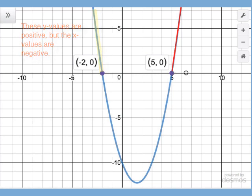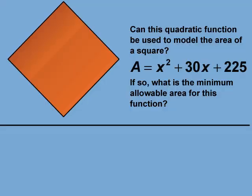Let's look at another example. Can this quadratic function be used to model the area of a square? A equals x squared plus 30x plus 225. If so, what is the minimum allowable area for this function?